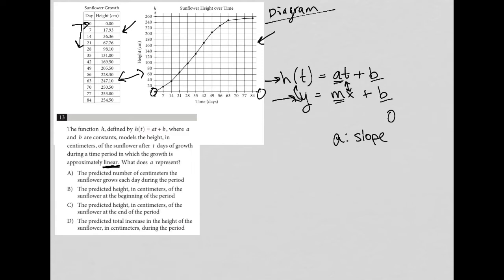So reading the question doesn't actually help us to write anything down that lets us know the exact answer, but at least it does let us know where we're focusing on because it asks what does a represent. So we know that a represents the slope, just given the format and the little hints in the question. So answer choice A says the predicted number of centimeters the sunflower grows each day during the period. That will kind of make sense, because in this case, slope is growth, or better yet, height per day.